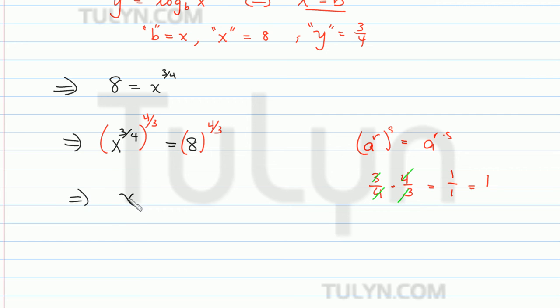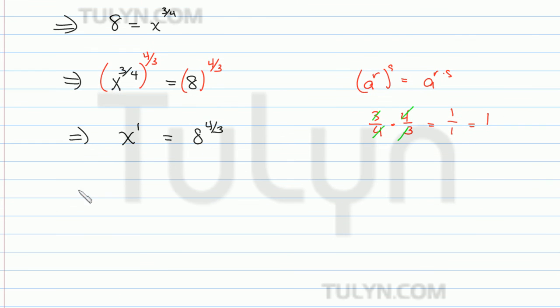So on the left side, we just have x to the 1st power, and on the right side, we have 8 to the 4 thirds power. So we have x is equal to 8 to the 4 thirds power.